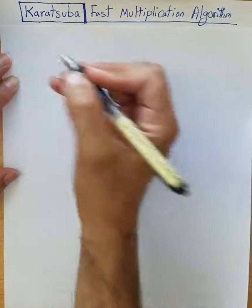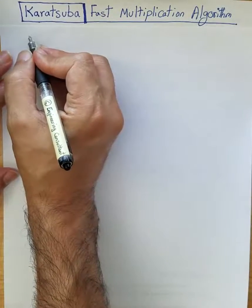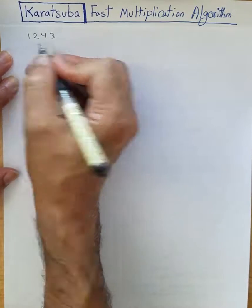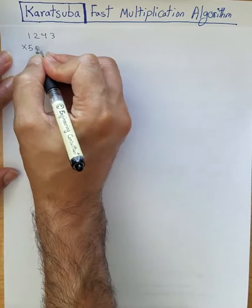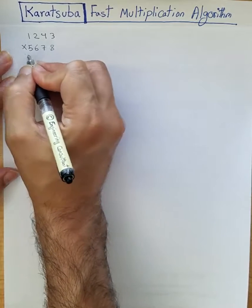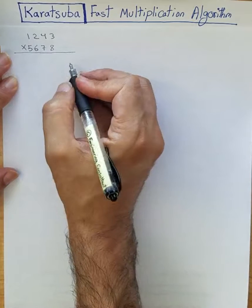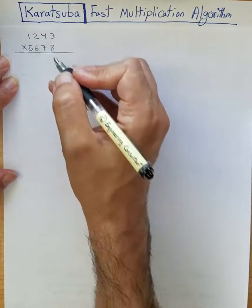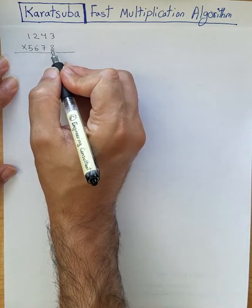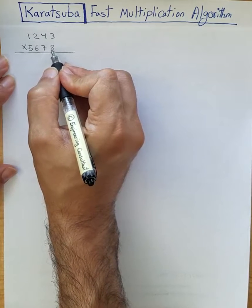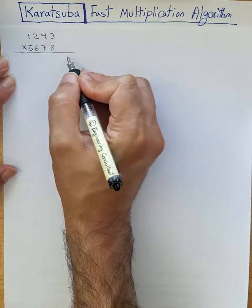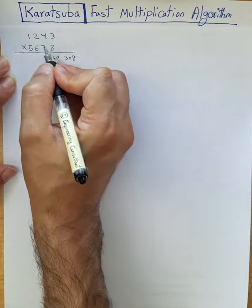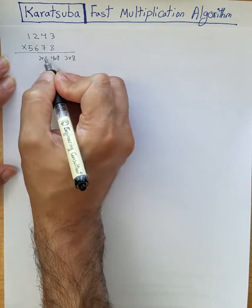Imagine you try to multiply, just as an example, two four-digit numbers. Let's say 1,234 multiplied by 5,678. If you proceed with the traditional grade school method, you would multiply every single digit by another single digit. Starting from the least significant digit 8: 8 times 3, 8 times 4, 8 times 2, and 8 times 1.